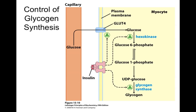The next topic is the control of glycogen synthesis, which is really about the insulin signaling pathway. We're looking at how to increase the amount of glucose imported into our muscle. A myocyte is a muscle cell; we have our capillary, which is our blood vessel, and we need to get glucose from the blood into the muscle. Once glucose is inside, hexokinase can act on it to form glucose-6-phosphate and glucose-1-phosphate, and eventually we can feed into glycogen synthase.